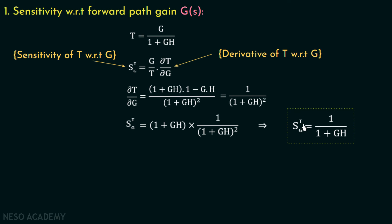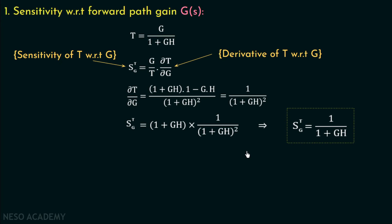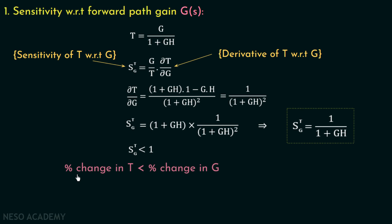The values of forward path gain G and feedback path gain H are always positive, so the product GH is always positive. Adding any positive quantity to 1 gives a result greater than 1, and if the denominator is greater than 1 then the fraction is less than 1. Therefore the sensitivity of transfer function T with respect to G is always less than 1, meaning the percentage change in transfer function T is less than the percentage change in G.